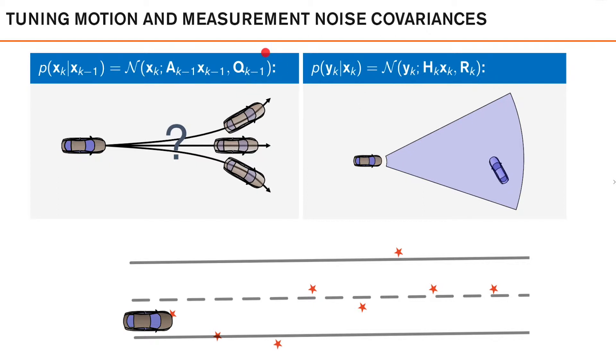And in the Kalman filter setting, both of these models are Gaussian models, like this. And the parameters that we typically want to tune are the process noise covariance and the measurement noise covariance.